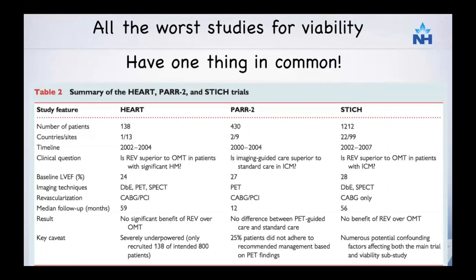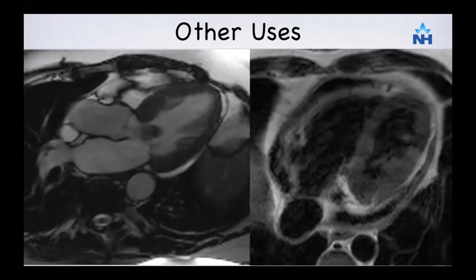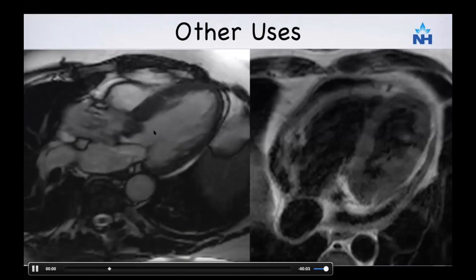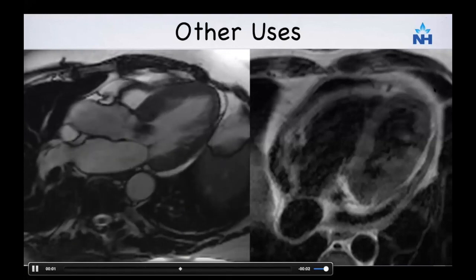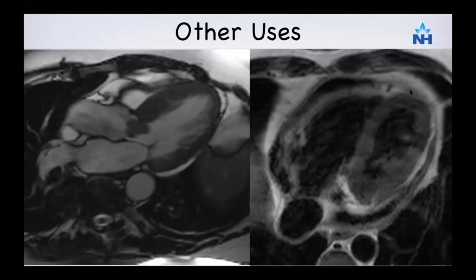Regarding the STICH, HEART, and BARI trials which suggested no need for viability assessment — these studies were fundamentally flawed in not using the right tests for viability assessment. SPECT and PET SPECT are not very good for viability, and some studies did not even follow PET's own recommendations. Other special uses of cardiac MR include characterizing cardiac masses and assessing pericardial thickening — constrictive pericarditis — where differentiation between constriction and restriction is also very good with cardiac MR.